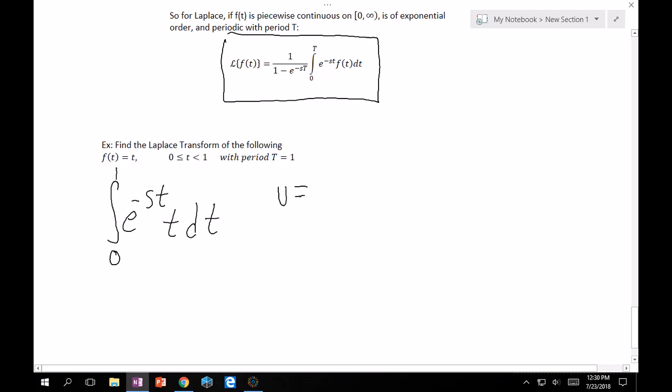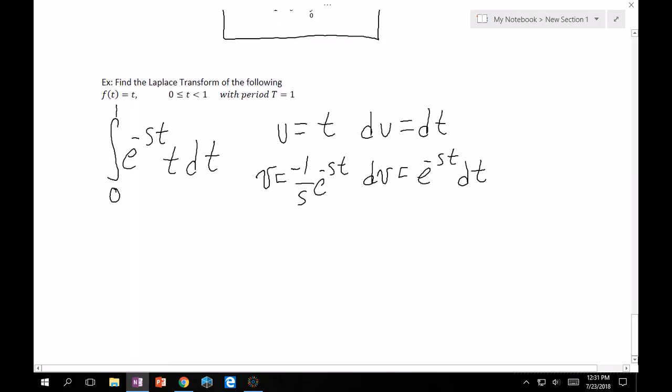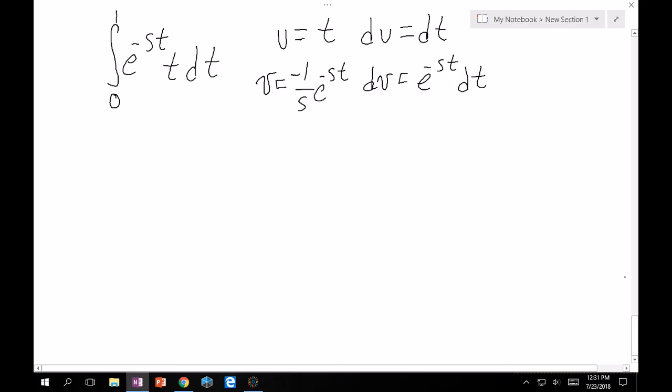So, you obviously have to do by parts. Let's, let's make our u equal to t. Our du is equal to dt, and then our dv would equal e to the minus s t dt. And then our v is equal to minus one over s e to the minus s t. At this point, again, it's uv minus vdu, which you've done before, so that's good. So, it becomes minus t over s e to the minus s t minus integral vdu, so it's going to be a plus one over s e to the minus s t dt.